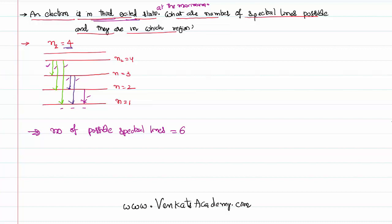Out of them, one, two, three - they're all falling into n equal to one. As they are jumping into n equal to one, they all fall in what is called Lyman series. Therefore, out of six, three are jumping into the first orbit - they're called Lyman series. They are obviously in the ultraviolet region.